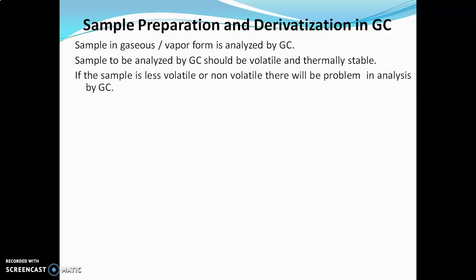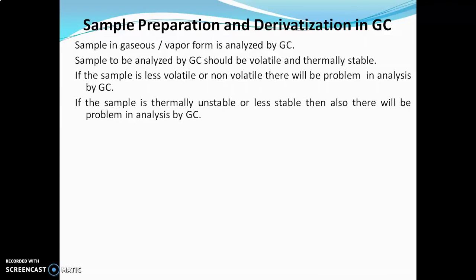If the sample is less volatile or non-volatile, there will be a problem in GC analysis because it will not convert into gaseous form. And if the sample is thermally unstable or less stable, there will also be a problem because due to heating, the structure of the sample may get destroyed. In both these conditions, it is not possible to analyze such a sample by using gas chromatography.